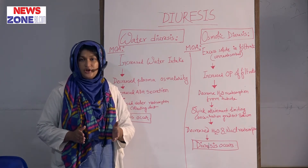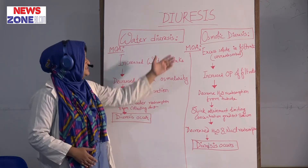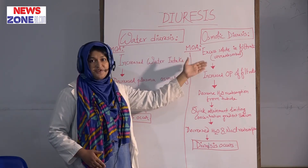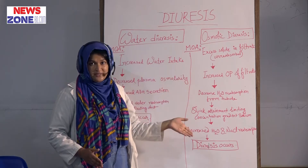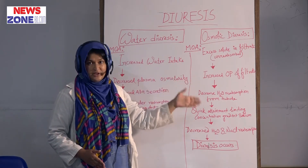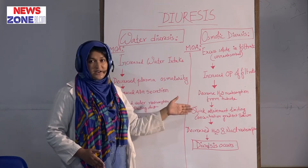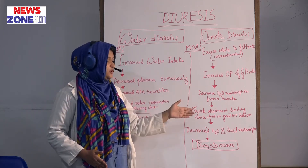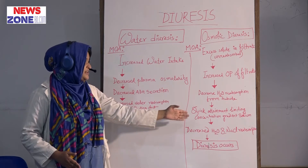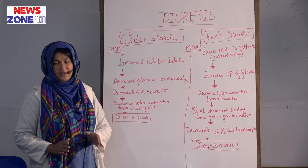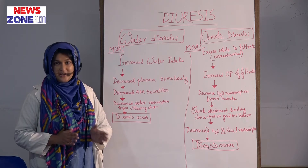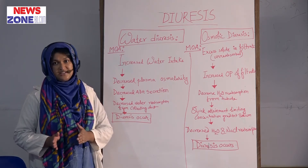The mechanism of action of osmotic diuresis: there will be excess unreabsorbed osmotically active solute in the filtrate, then increased osmotic pressure in the filtrate, which causes decreased water reabsorption from the tubule and quick attainment of the low limiting concentration gradient of sodium. Ultimately, decreased sodium chloride and water reabsorption causes diuresis.